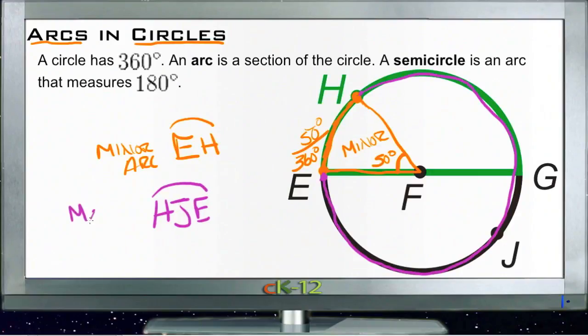then we know that this must be a major arc and that it must be greater than 180 degrees. Because if this were less than half of the circle, it would be the minor arc and there'd be something else that was bigger than it is.